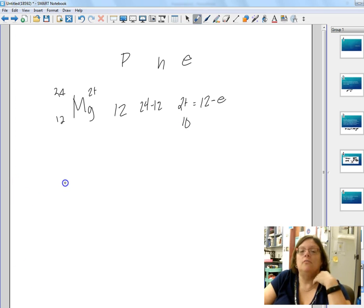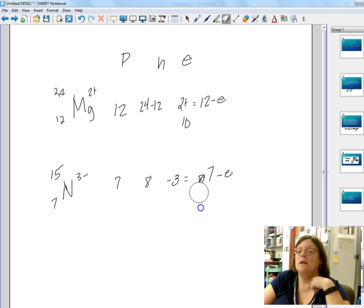Another one, if we do nitrogen. Nitrogen has a negative 3 charge. We'll do nitrogen-15. Nitrogen would have 7 protons. Neutrons would be 15 minus 7, or 8. For electrons, we're going to have negative 3 equals protons, which is 7, minus electrons. 7 minus what is going to give us a negative 3? Solve for the electrons, you get 10.